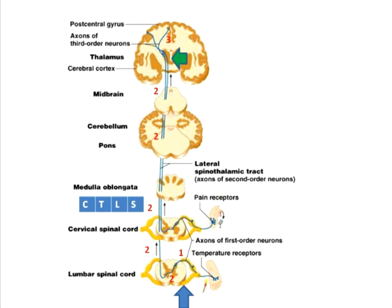The first order neuron starts from the receptor, goes through the posterior root ganglion, and into the posterior horn of the spinal cord. There, these fibers can ascend or descend a few segments before they ultimately synapse, completing the first order neuron.